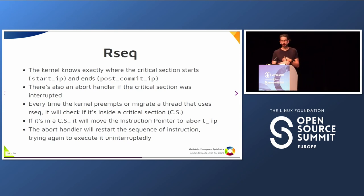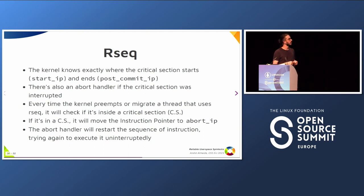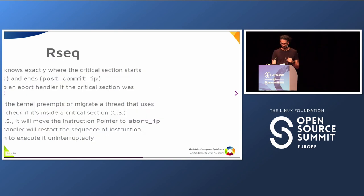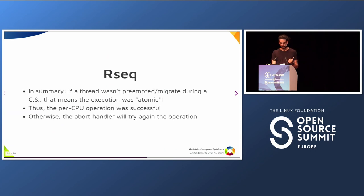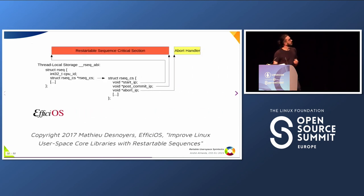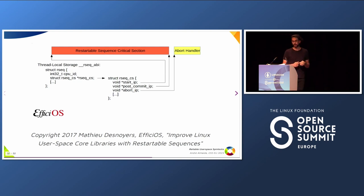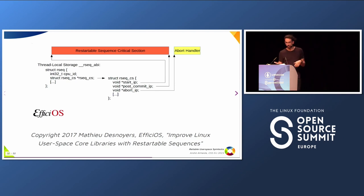So that's RSEQ — this is how it manages to create atomic per-CPU operations. If you reach the post-commit IP, you are sure that the kernel did not preempt you or migrate your thread to another CPU — so basically it was atomic. In the diagram you can see all the critical section instructions with the start IP and the post-commit IP marking the boundaries, plus another pointer for the abort handler.